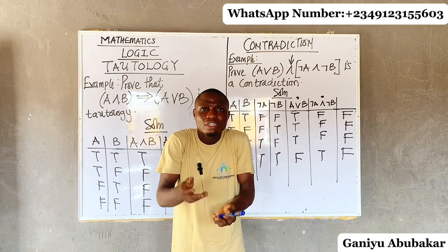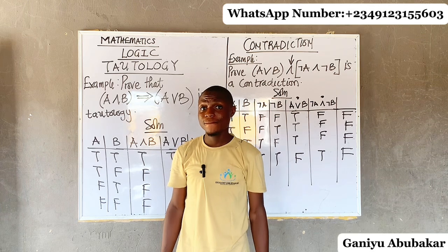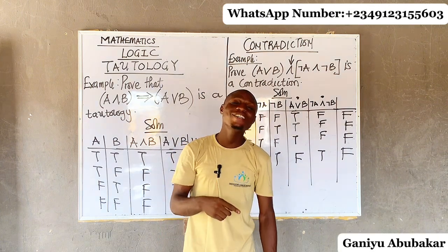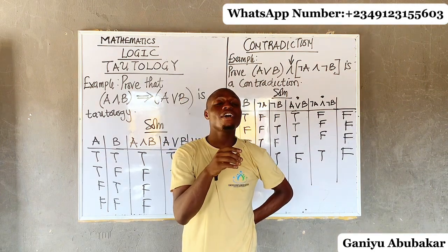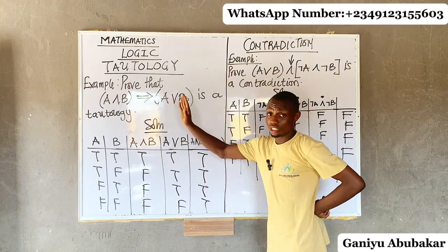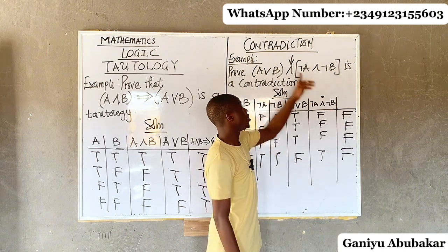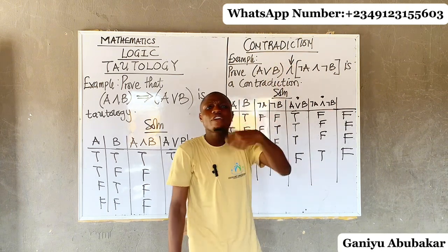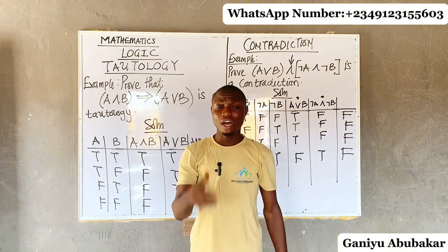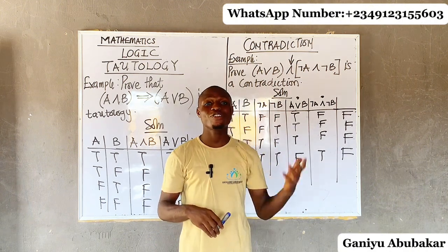What if there is a mixture of true and false in the final answer? That's the assignment. If all true it's tautology; if all false it's contradiction — but what if you have true and false mixed together as your final product? Leave your answer to that assignment in the comment section and I'll reply whether you're correct or wrong.